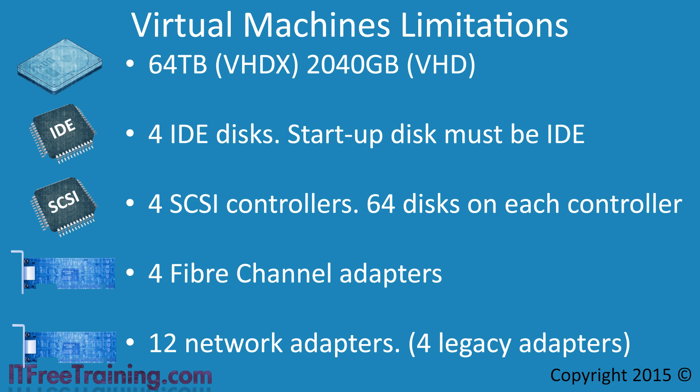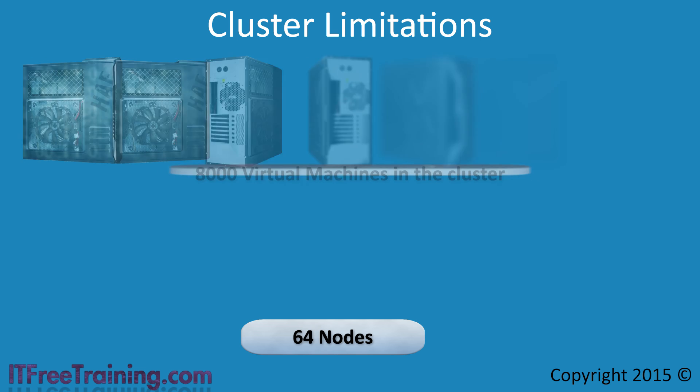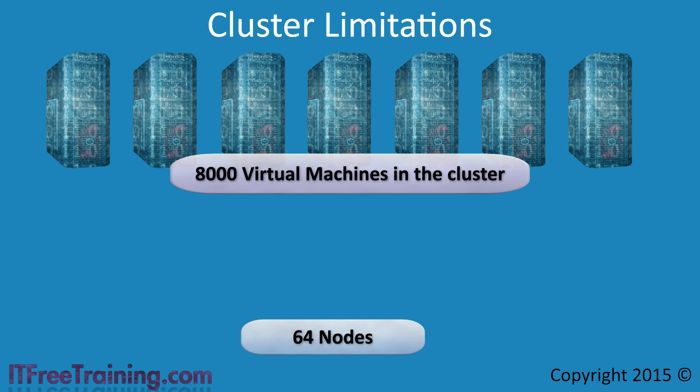This covers all the virtual machine limitations. The last limitation I will look at is cluster limitations. Hyper-V supports clusters of up to 64 nodes. One cluster can support up to 8000 virtual machines. There is a limitation of 1024 virtual machines per server or node. However, if you were to use 8000 virtual machines, they would be spread out amongst the nodes in the cluster.